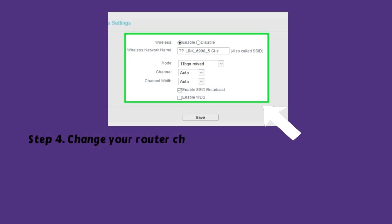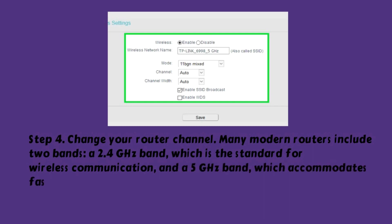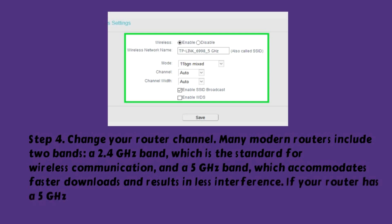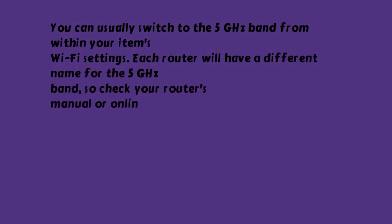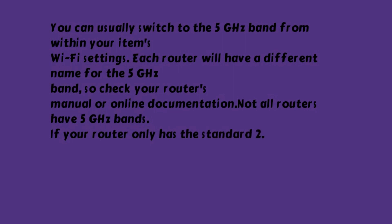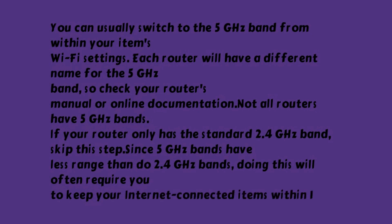Step 4: Change your router channel. Many modern routers include two bands: a 2.4GHz band, which is the standard for wireless communication, and a 5GHz band, which accommodates faster downloads and results in less interference. If your router has a 5GHz band, switching to it will prevent interference from other internet-connected items and nearby wireless connections. You can usually switch to the 5GHz band from within your item's Wi-Fi settings. Each router will have a different name for the 5GHz band, so check your router's manual or online documentation. Not all routers have 5GHz bands — if your router only has the standard 2.4GHz band, skip this step. Since 5GHz bands have less range than 2.4GHz bands, doing this will often require you to keep your internet-connected items within 10 to 15 feet of the router.